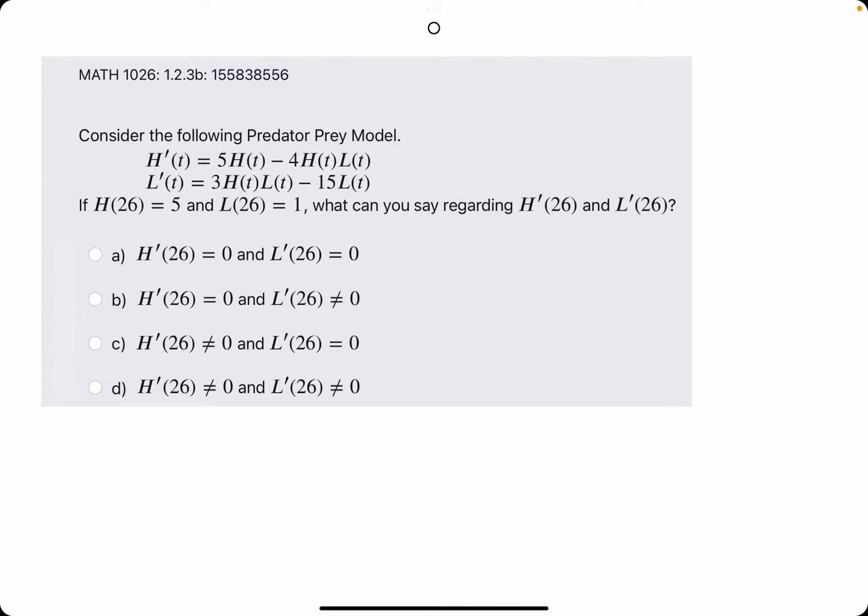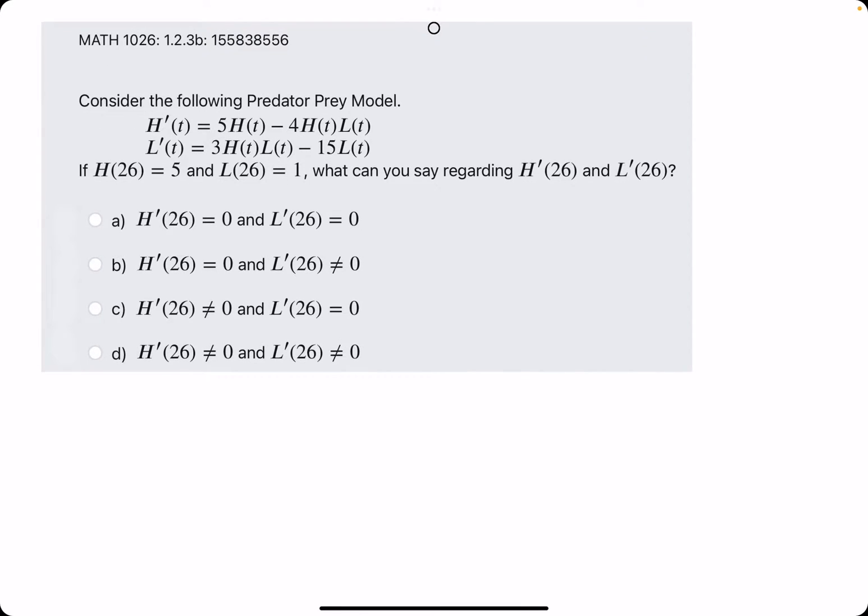Okie dokie. Second example for this problem. I'll work it out a bit faster. If you'd like more of a breakdown, please visit the first example. We are calculating h prime and l prime based on these h and l values that were provided.